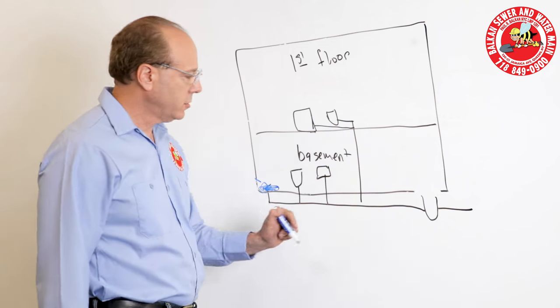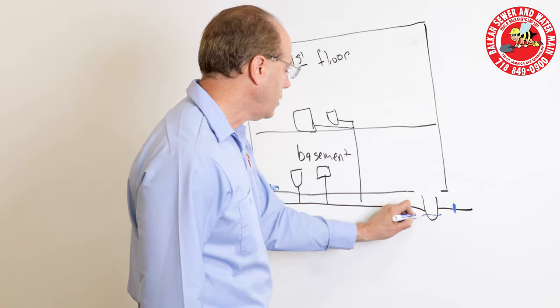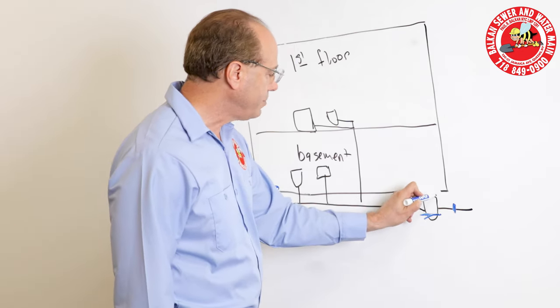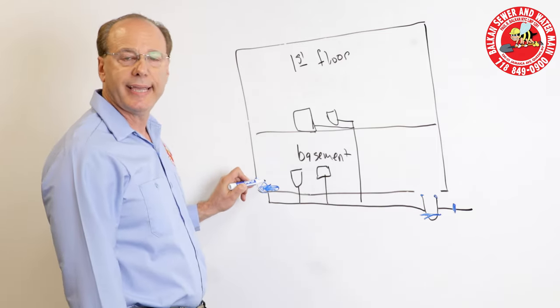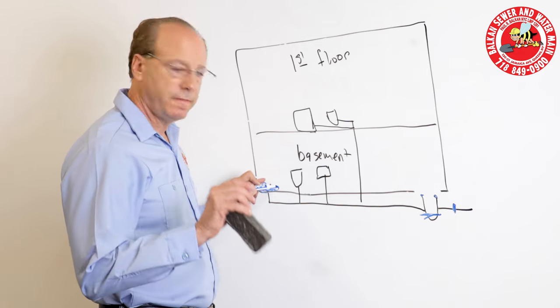So, in other words, if you had a main sewer clog, if you had a clog in the trap, if the caps are on tight, this water will back up until it has a place to get out. That would be your shower. That would be your lowest fixture.